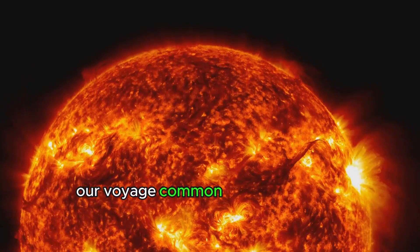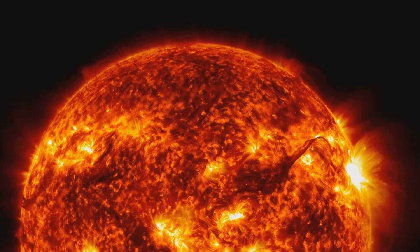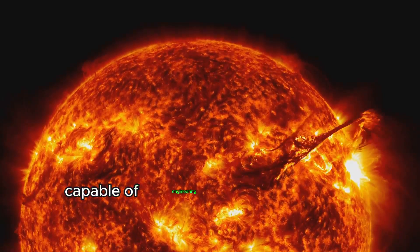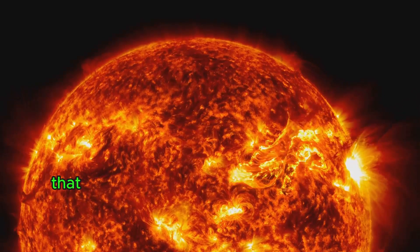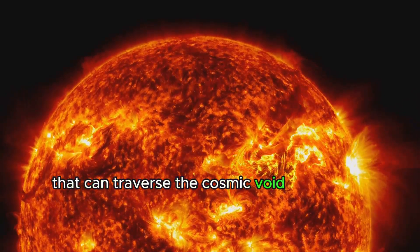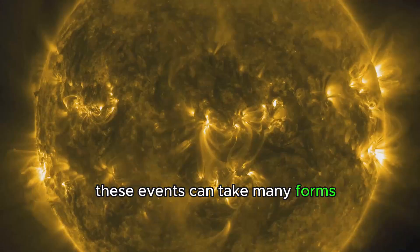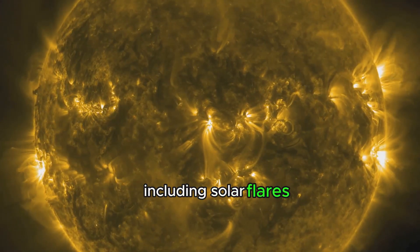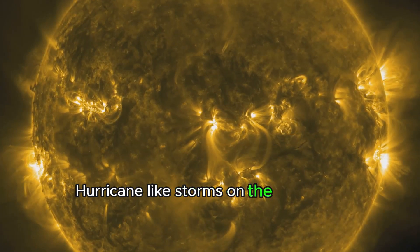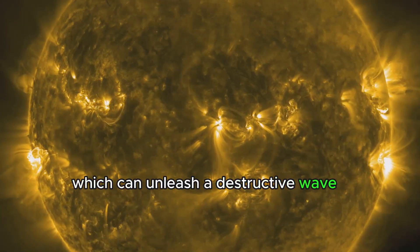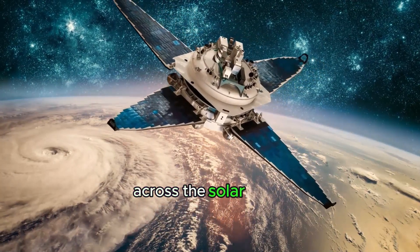Our voyage commences with the Sun, the pulsating heart of our solar system, capable of engineering potent solar storms that can traverse the cosmic void to touch our Earth. These events can take many forms, including solar flares, hurricane-like storms on the Sun's surface which can unleash a destructive wave of radiation across the solar system.